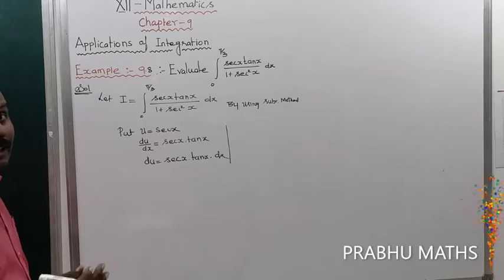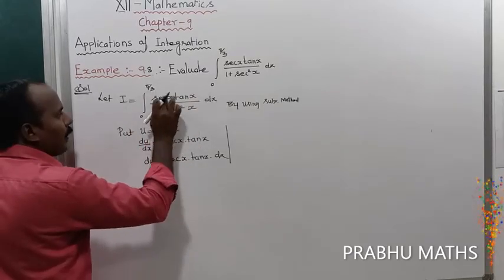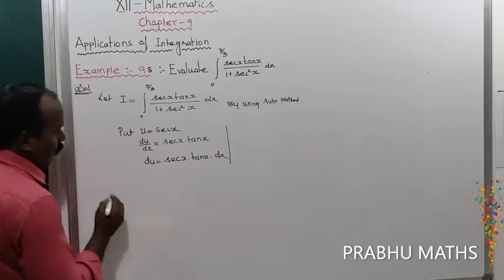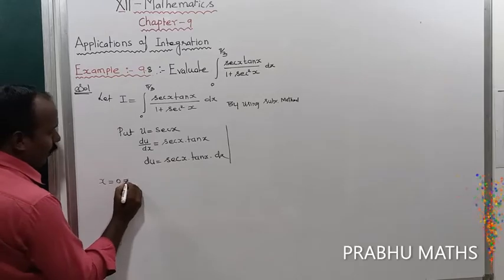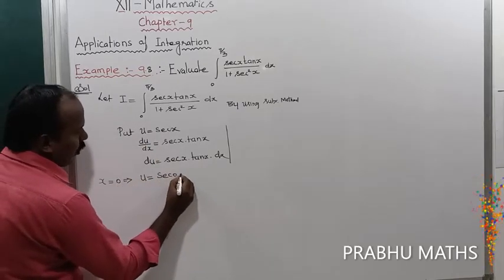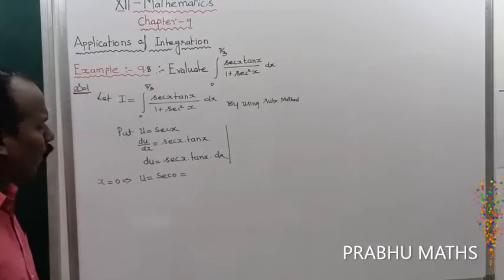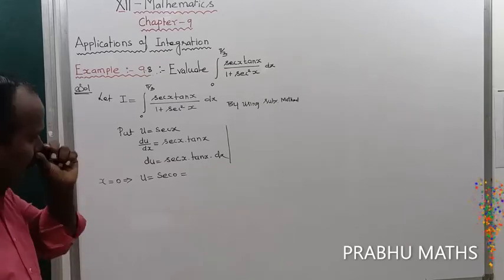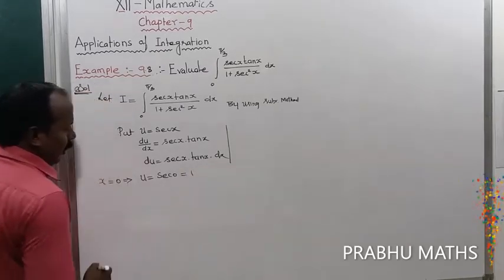Now we change the limits, because the limits are in terms of x and we need them in terms of u. When x equals 0, u equals sec(0). Since cos(0) equals 1, sec(0) equals 1 divided by 1, which equals 1.